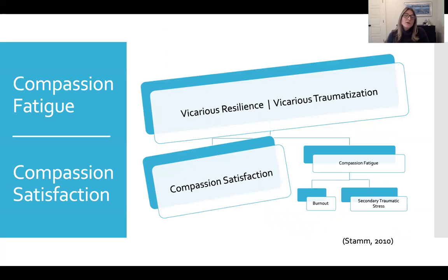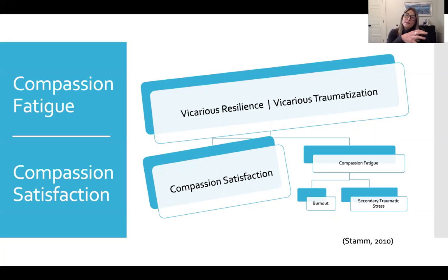On the other hand, if we want to increase our vicarious resilience, we're going to want to do things that increase our compassion satisfaction even more, so that we're weighted in that direction. At the same time, we want to reduce symptoms of burnout and secondary traumatic stress as much as possible, so that our experience of compassion fatigue doesn't tip us toward traumatization.